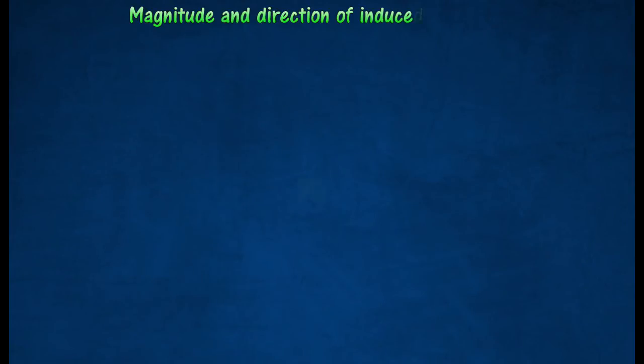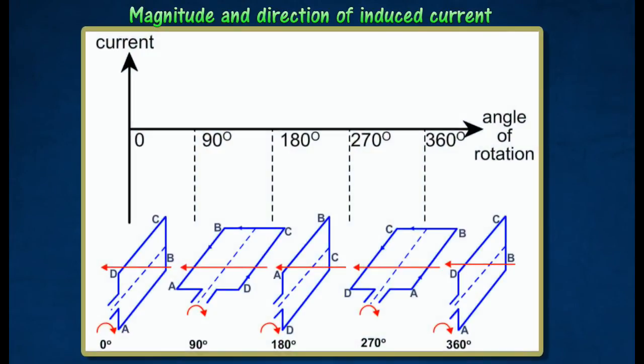The following graph shows the magnitude and the direction of the induced current changes according to the position of the coil. The magnitude of the induced current in an alternating current generator varies with the position of the coil.